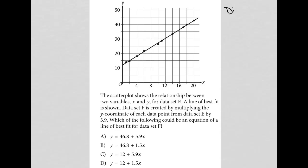So this question is a diagram question, more specifically a graph question. Let's read the question and see what they're asking us to find here. The question says the scatter plot shows the relationship between two variables, X and Y, for data set E. A line of best fit is shown.